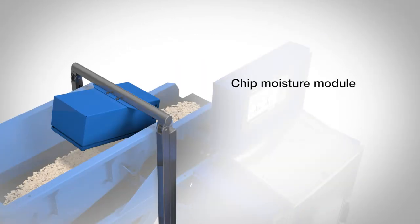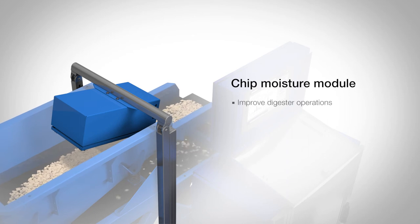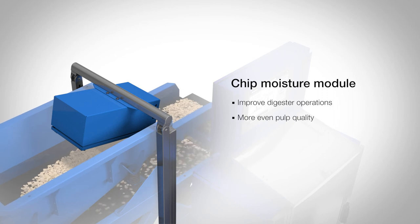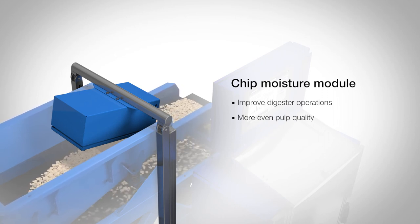Measuring chip moisture in a ScanChip installed before the pulping process, the amount of water in the chips will be a known parameter. This will give important information to the digester control system, enabling the mill to stabilize kappa number and achieve more even pulp quality.